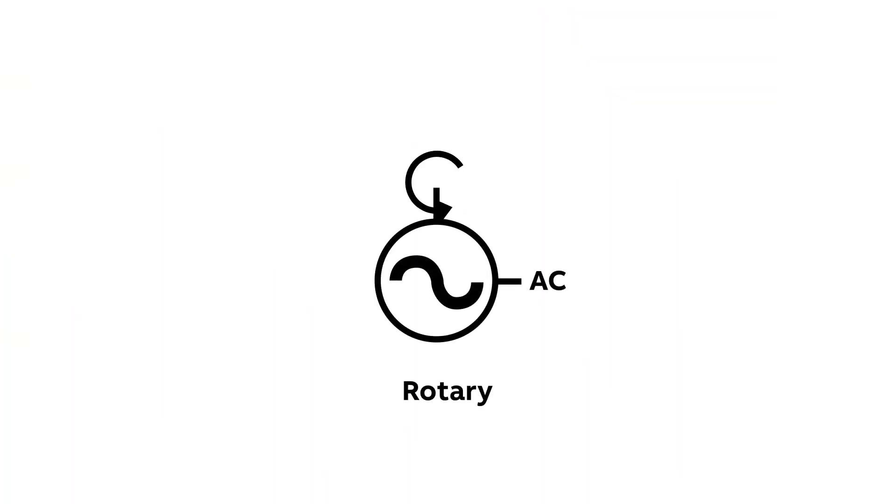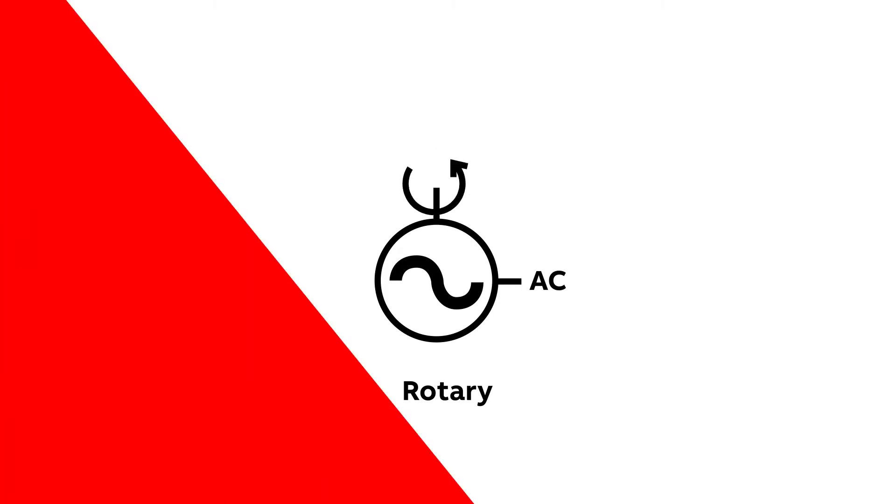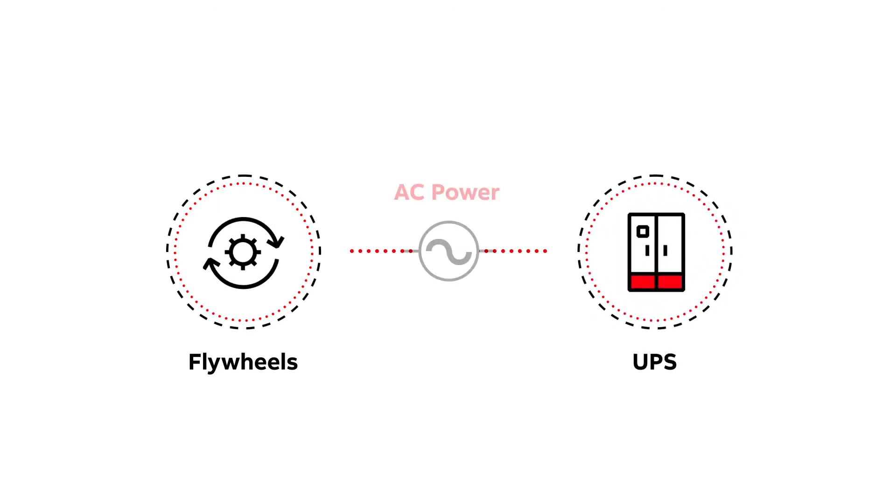Rotary UPS systems have major moving parts. A flywheel, which stores kinetic energy, is mounted directly into the shaft of the generator and transfers AC power through the generator shaft.